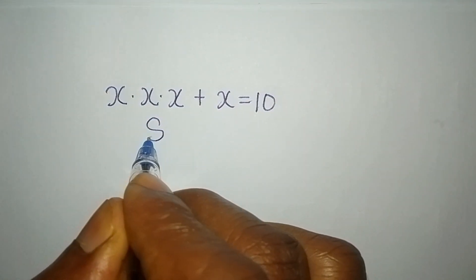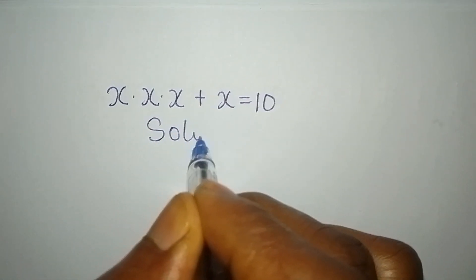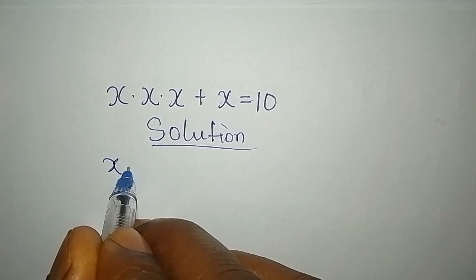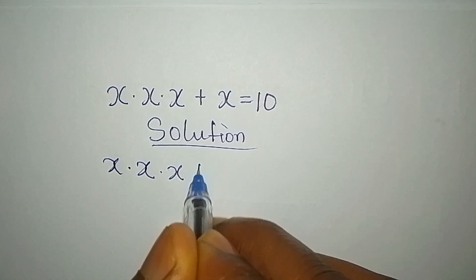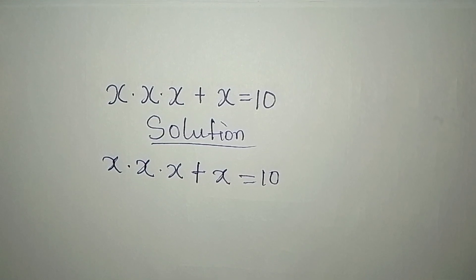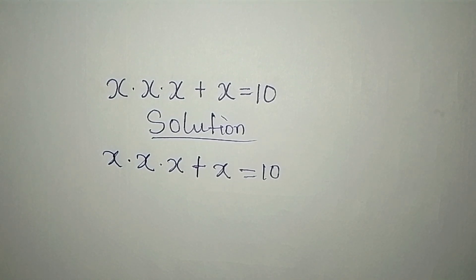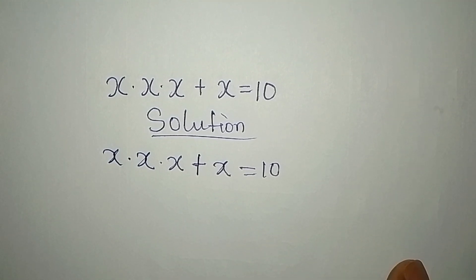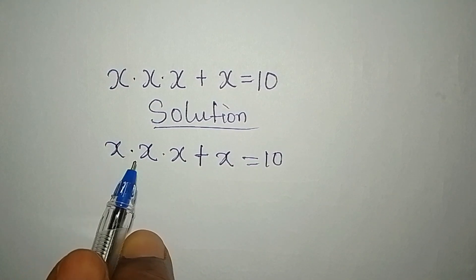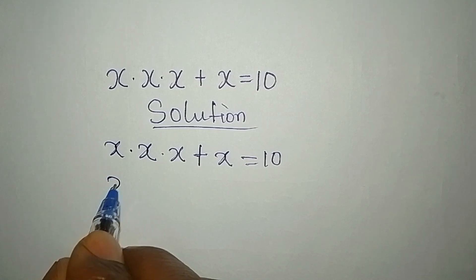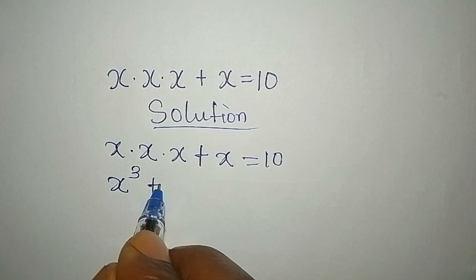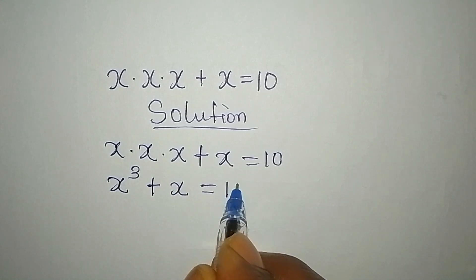Hello everyone, let's provide a clear solution to this problem: x multiplied by x multiplied by x plus x equals 10. We are to provide the complete solution to this problem. x multiplied by x multiplied by x gives us x to the power of 3, then plus x, and this is equal to 10.